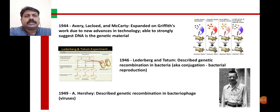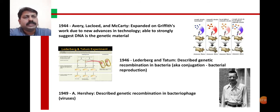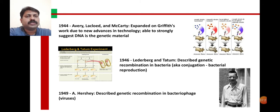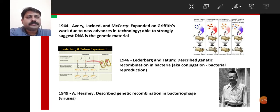In 1949, Hershey described genetic recombination in a virus. All these experiments used bacteria and viruses to prove that the genetic material is DNA, because it carries information from one generation to further generations. Key dates: 1928 — Griffith; 1944 — Avery, MacLeod, and McCarty; 1946 — Lederberg and Tatum; 1949 — Hershey.